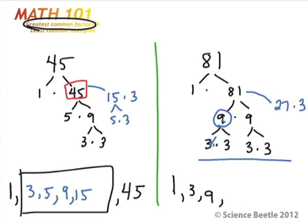So to finish up the sequence here, the factors for 81 are going to be 1, 3, 9, 27, and 81. Okay?